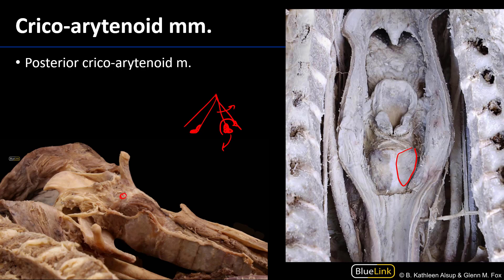The other muscle — and you're not responsible for finding this in lab — is the lateral cricoarytenoid muscle. We can see here that the thyroid lamina has been cut and reflected. We can see coming from the cricoid cartilage up to the muscular process of the arytenoid cartilage, where the posterior cricoarytenoid muscle also goes. Those muscles are going to pull the muscular processes medially so as to adduct the vocal folds, bringing them into the position for phonation — because when you bring the vocal folds into the airway, they have the opportunity to vibrate with exhalation, which is the basis for phonation.